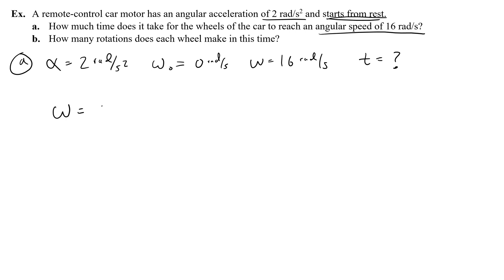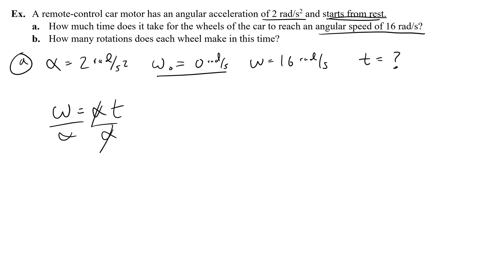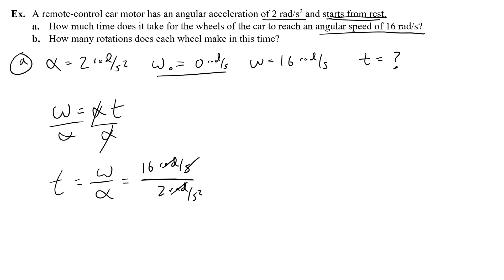Final angular velocity equals angular acceleration times time plus the initial angular velocity. Getting rid of the zero term for omega-naught, and solving for t by dividing both sides by alpha, I get t equals omega over alpha. So 16 radians per second divided by 2 radians per second squared — the radians cancel, one of the seconds cancels — and I get 16 over 2, which is 8 seconds.